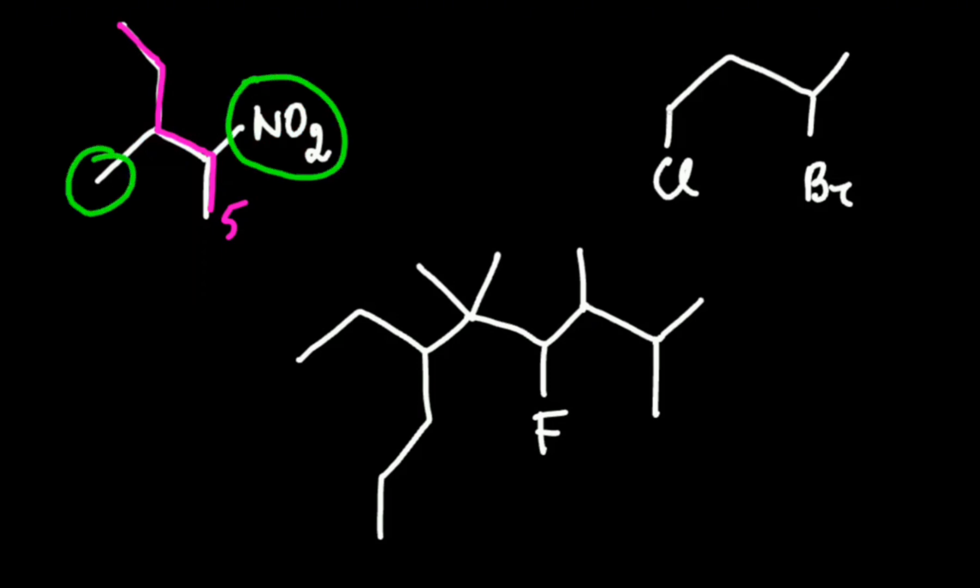In the next compound the longest chain is right here. So the chlorine atom and bromine atom are substituents. Don't forget that the longest chain is only the path from one carbon to another. Chlorine and bromine can't be a part of the longest chain.